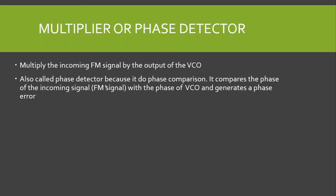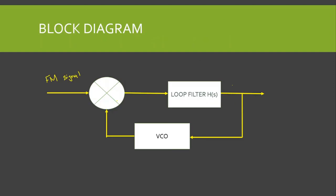The multiplier is also called the phase detector or phase comparator because it performs phase comparison. It compares the phase of the incoming FM signal with the phase of the VCO and generates a phase error. If there is a difference in phase or frequency between the FM signal and the VCO, it generates an error signal.